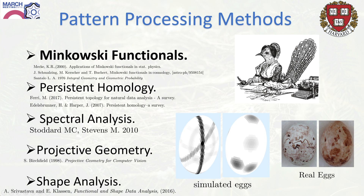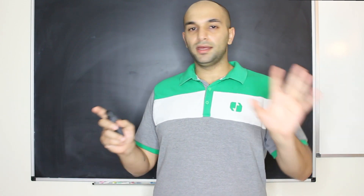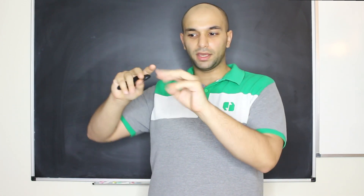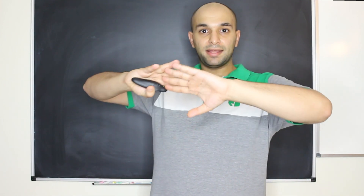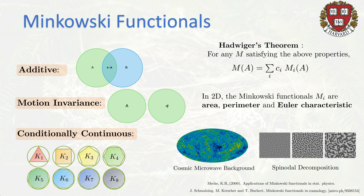In this talk I'll focus on Minkowski functionals. They have interesting mathematical properties — they generalize notions like volume and surface area of a pattern. They are additive, so if two non-intersecting sets each have a value, you get their sum. They are motion invariant, so rotating or translating a pattern doesn't change the value. And they're continuous, so something nearly circular has nearly the same value as a circle. Because of Hadwiger's theorem, anything satisfying these three properties must be a linear combination of the Minkowski functionals.